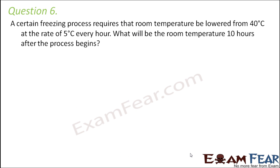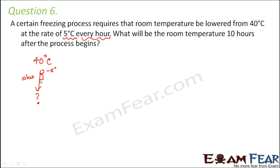Question number 6. A certain freezing process requires that room temperature be lowered from 40 degrees Celsius at the rate of 5 degrees Celsius every hour. The room temperature currently is 40 degrees Celsius and we want it to decrease. What will be the room temperature 10 hours after the process begins? After every one hour the temperature reduces by minus 5 degrees Celsius.